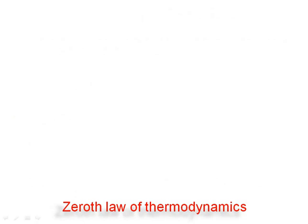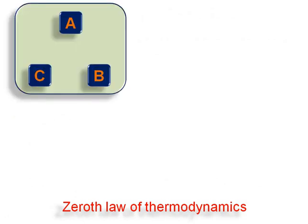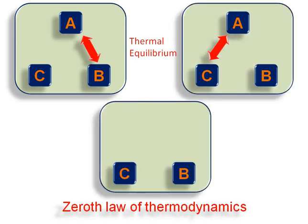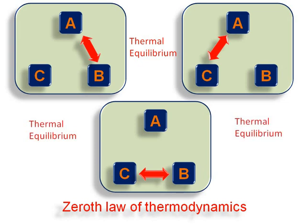This can be represented as three thermodynamic systems A, B, and C. Initially, system A and B are in thermal equilibrium — their temperatures are the same. System A is also in equilibrium with system C, meaning A and C are in thermal equilibrium. From these, we can say system B and system C are also in thermal equilibrium. Hence, systems A, B, and C are all in thermal equilibrium, according to the 0th law of thermodynamics.